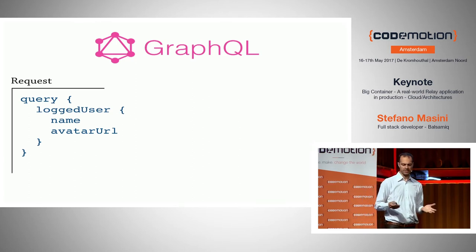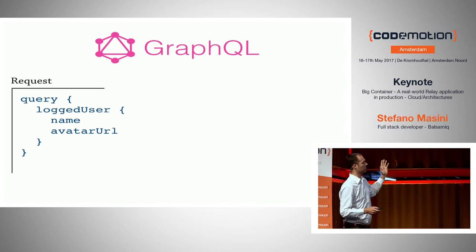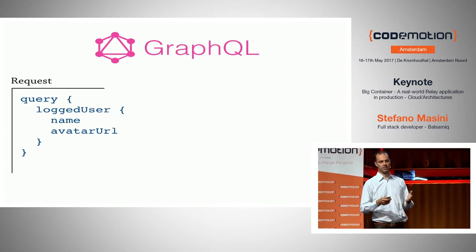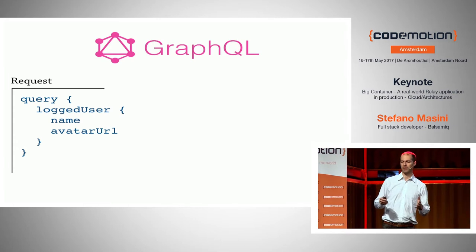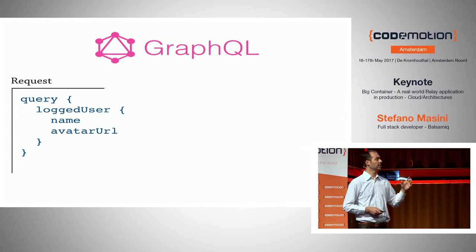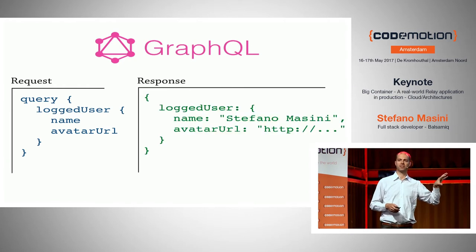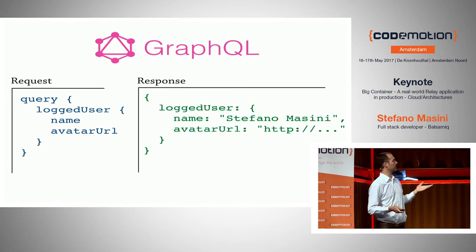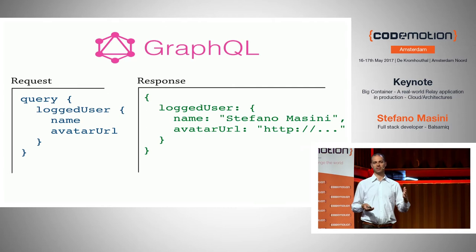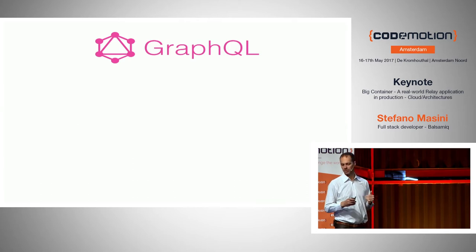Let's see how GraphQL looks. This is a request — this is what it looks like. In REST you have an entry point that is pretty much opaque: you hit it and you have to know what you get. In GraphQL, instead, you describe what you get. You can think of it as a JSON with only the keys — without the values. And then the response is the JSON with the values. That's the kind of simplification you should think about when you think about GraphQL.